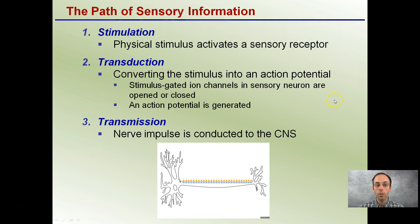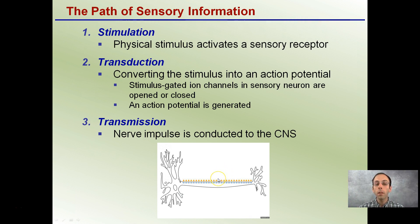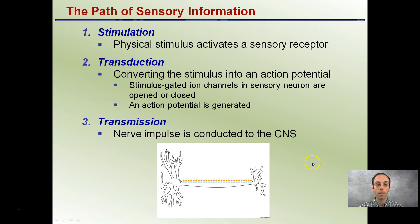The path of sensory information begins with stimulation, which is the physical stimulus that activates sensory receptors — the physical touch that's involved. Transduction is the converting of that stimulus into an action potential. Stimulus-gated ion channels in sensory neurons are opened or closed, and an action potential gradient is created as positive and negative. This then allows transmission, where nerve impulses are conducted to the central nervous system.